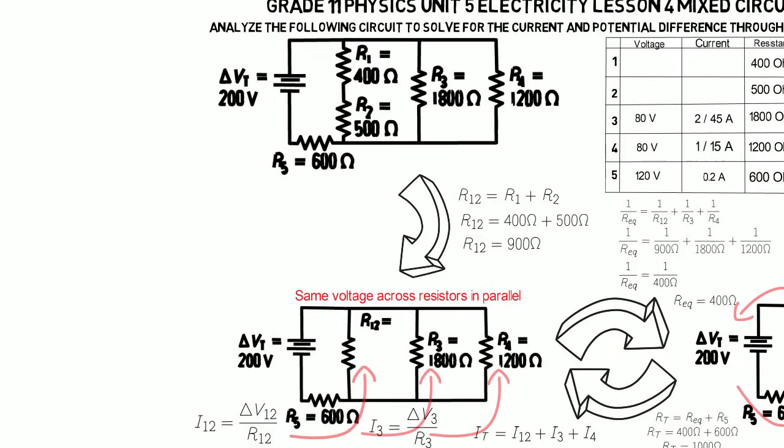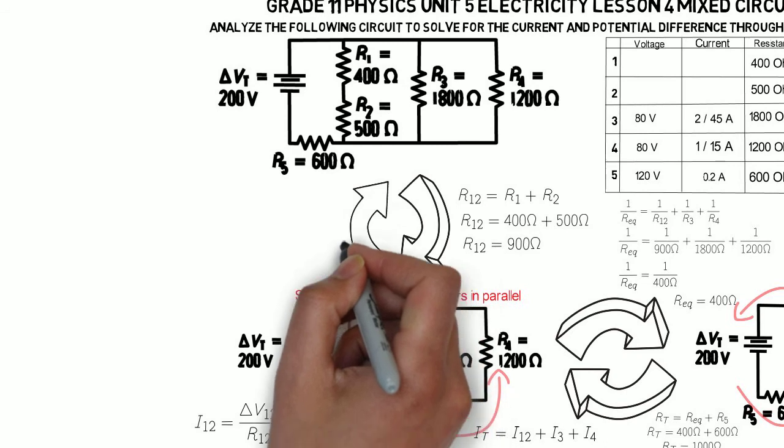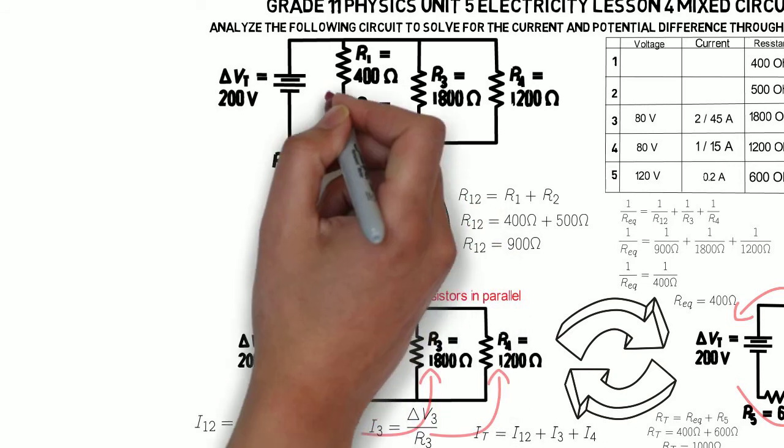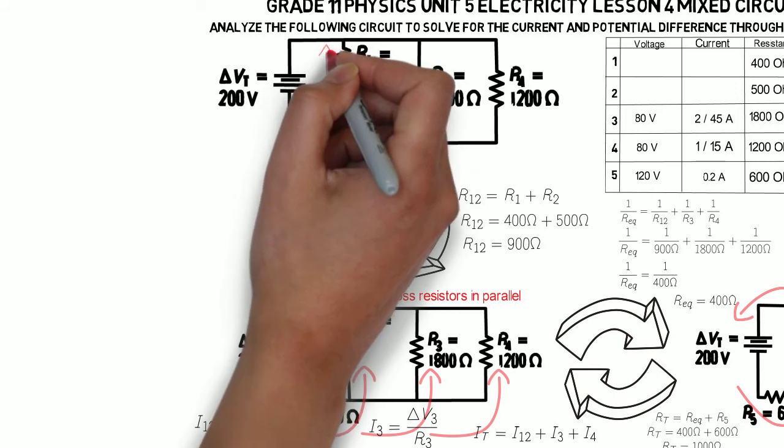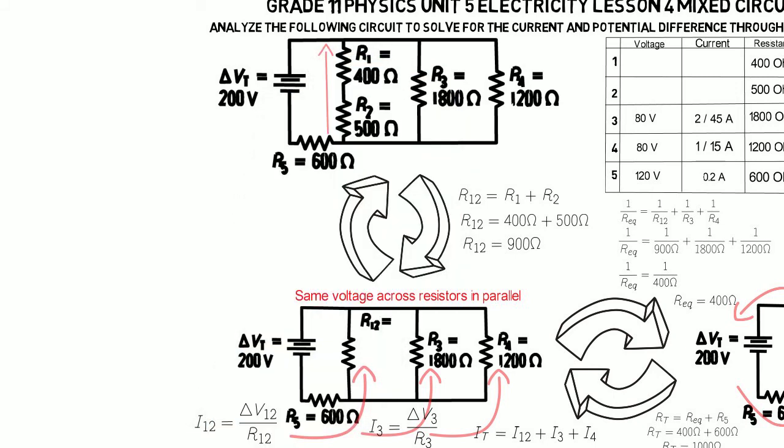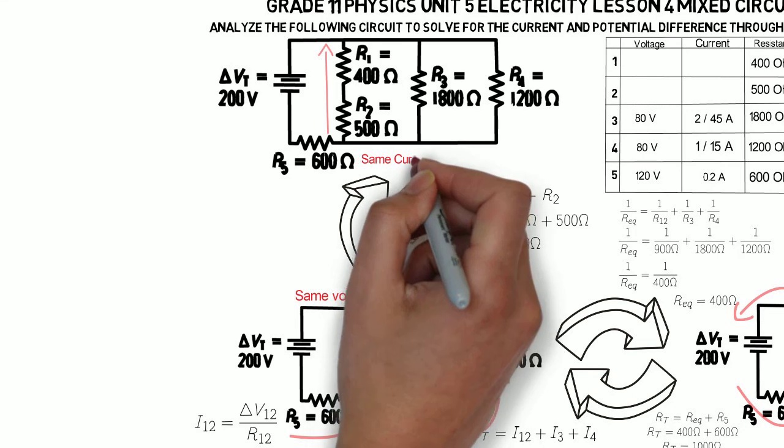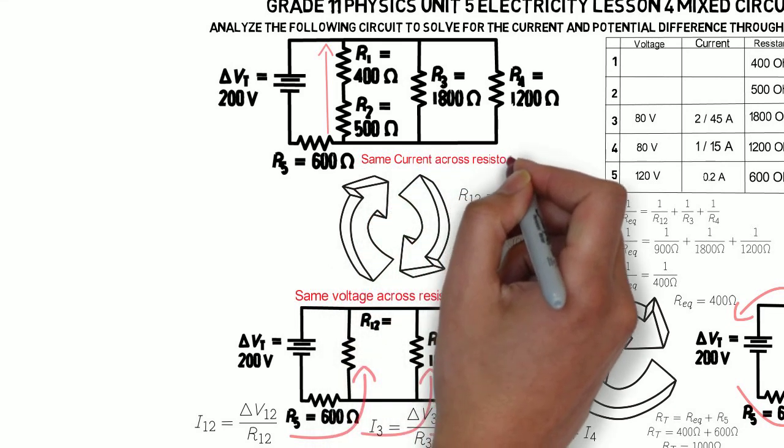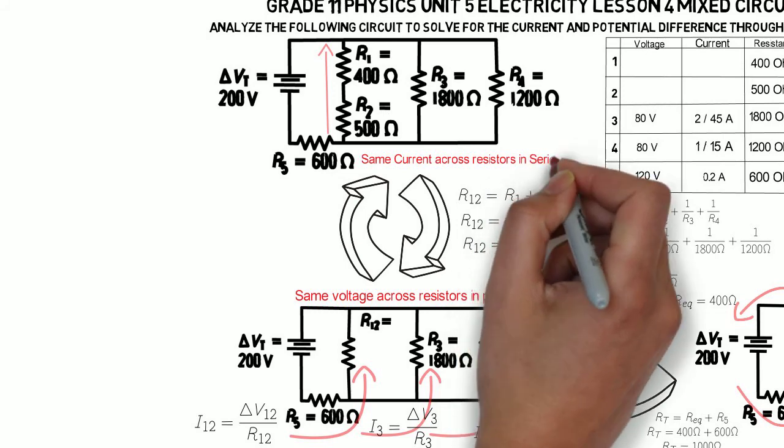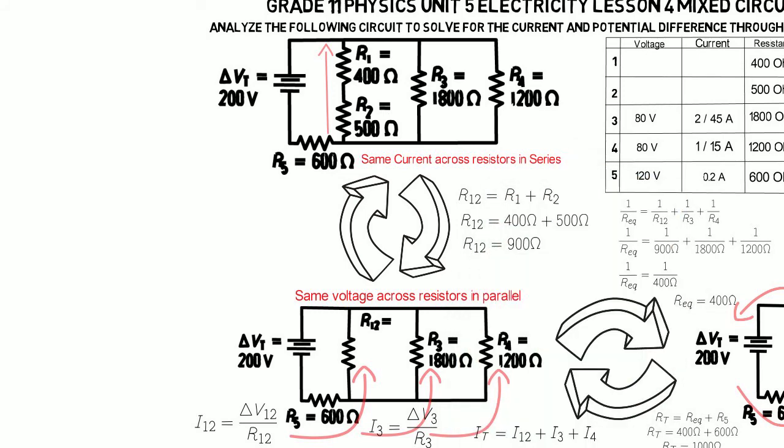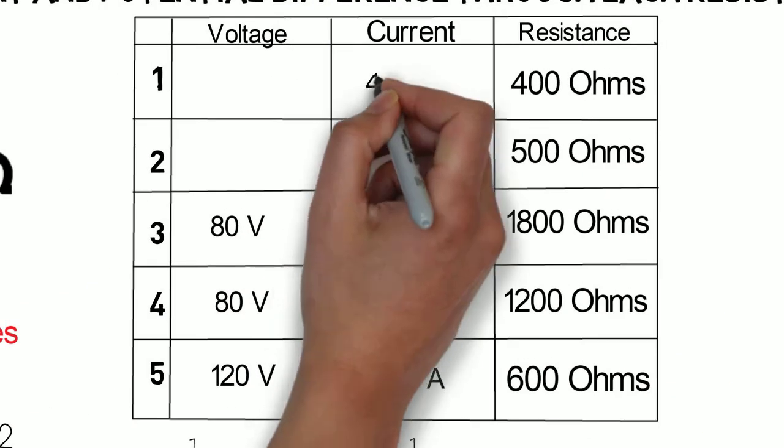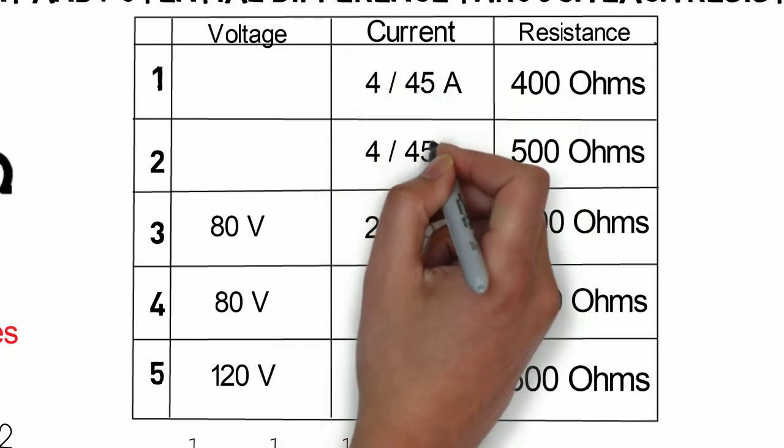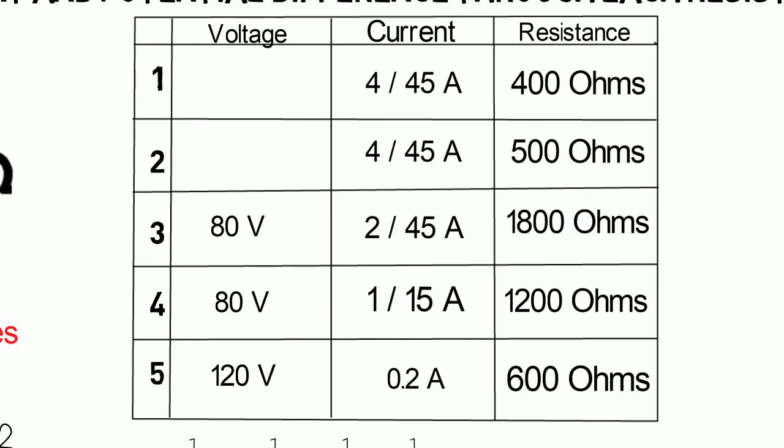Now we can finally go back to our original circuit, after recording our information, where we split up R12 back into R1 and R2. Now those resistors are in series, and we know through a series circuit the current is the same. Now the current through R12 was 4 over 45 amps, so we know the current through R1 is 4 over 45 amps, and the current through R2 is 4 over 45 amps.